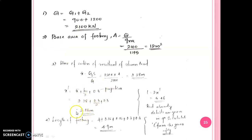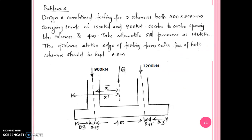We get x-dash equal to 2.73. For a rectangular footing, L is equal to 2 times x-dash. The total length of the footing is calculated as 1.15 plus 0.3 plus 0.3, giving the footing length.